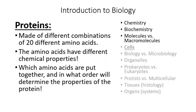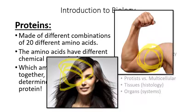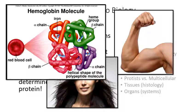Proteins are made of different combinations of 20 different macromolecules called amino acids. Each of the 20 amino acids has different chemical properties, and depending on which amino acids you put together and what order, they will have different properties. Hair is a protein, and so is muscle — but they are made of different combinations of amino acids. Hair and fingernails are made of the same protein called keratin. Hemoglobin is the protein carried by red blood cells that carries oxygen around in the blood.